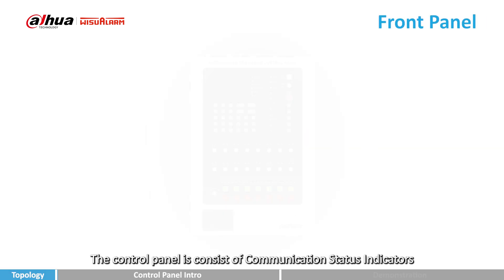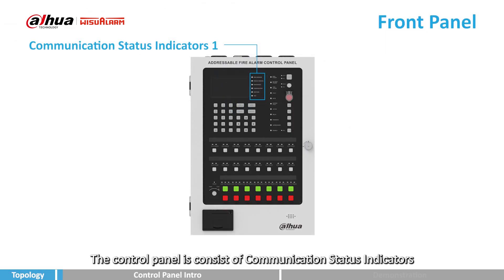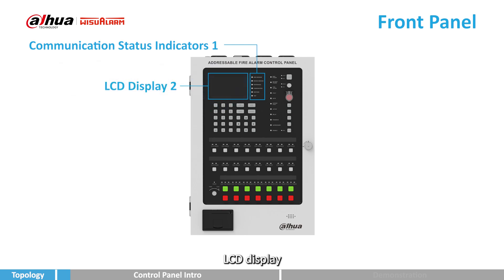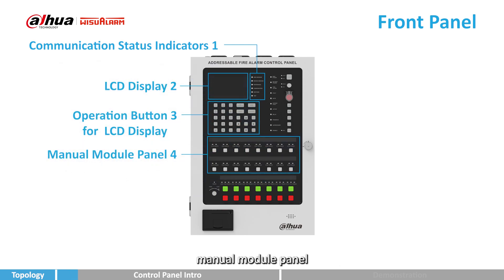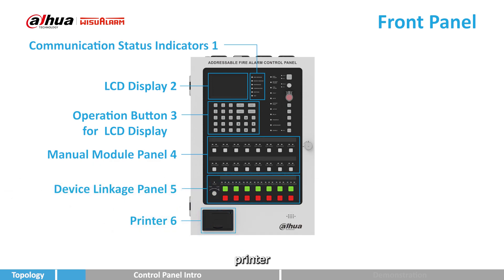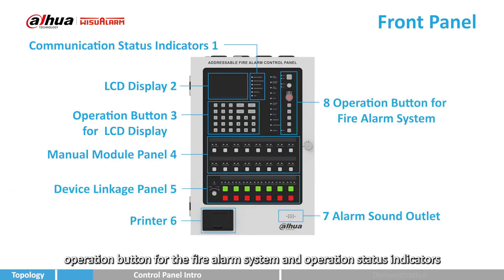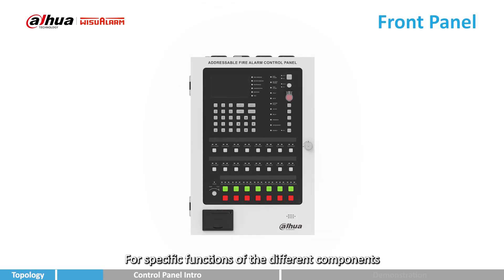The control panel consists of communication status indicators, LCD display, operation buttons for the LCD display, manual module panel, device linkage panel, printer, alarm sound outlet, operation buttons for the fire alarm system, and operation status indicators. For specific functions of the different components, please refer to the annotations above.